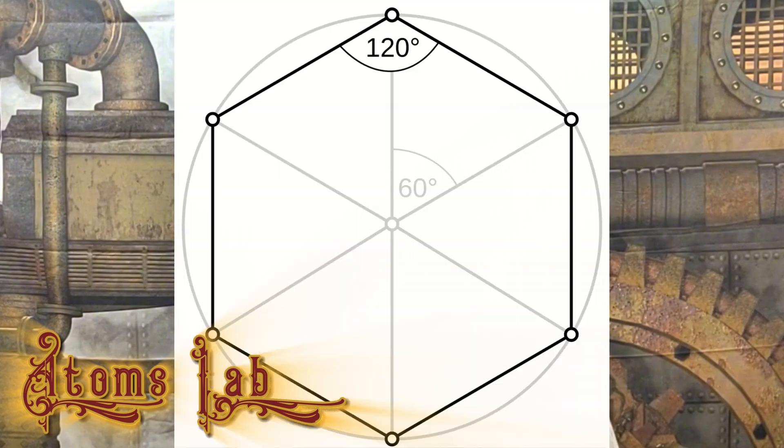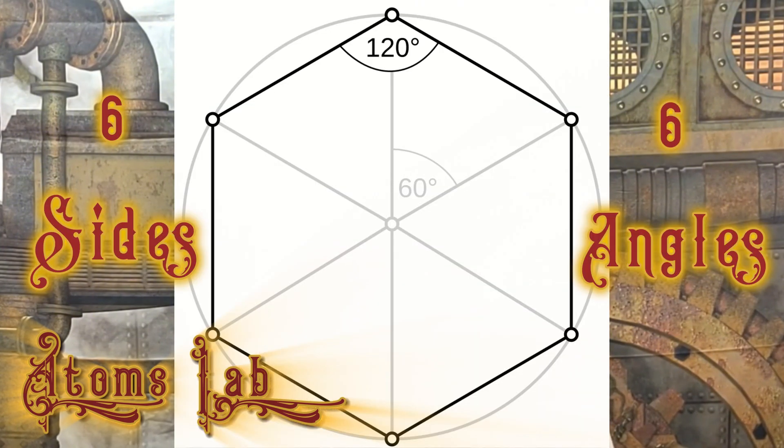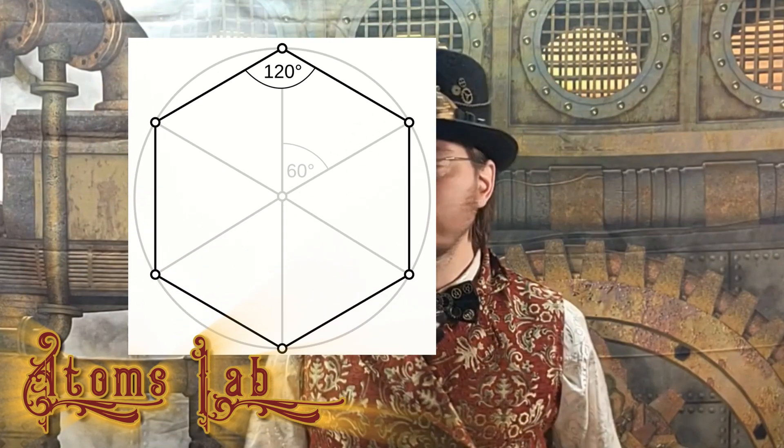A hexagon is a shape that has six sides and six angles. Let's count them: one, two, three, four, five, six — six sides. One, two, three, four, five, six — six angles.